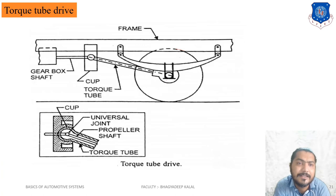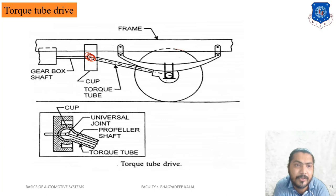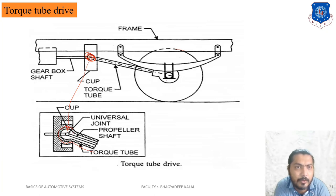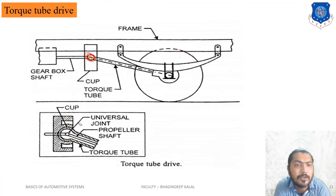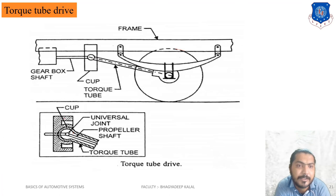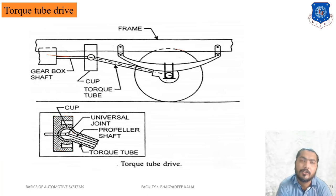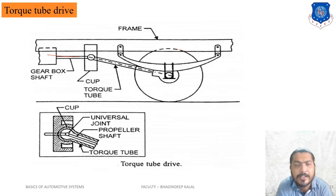Inside the torque tube, the propeller shaft is enclosed — you cannot see the propeller shaft from outside; you only see the torque tube. The torque tube bears all driving torque and torque reaction. The other end of the torque tube has a ball-type or universal joint, and the propeller shaft connects to the gearbox through a cup-shaped housing. All this mechanism is assembled inside that cup shape.